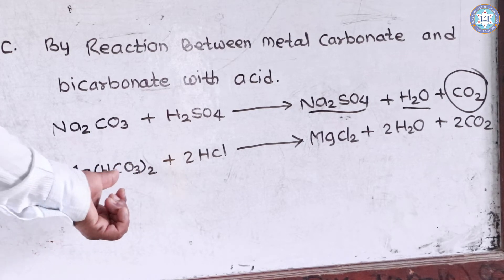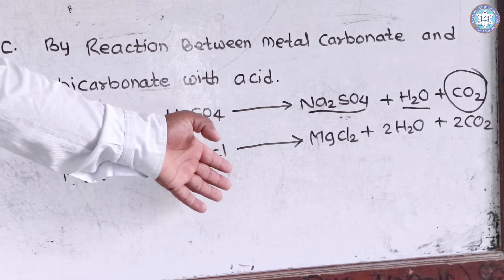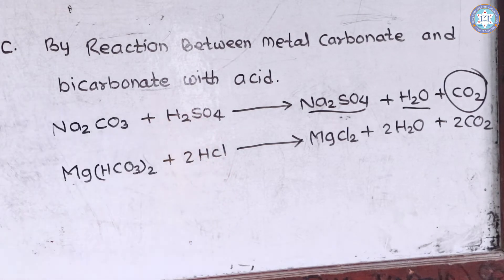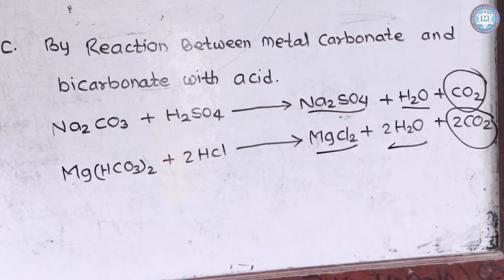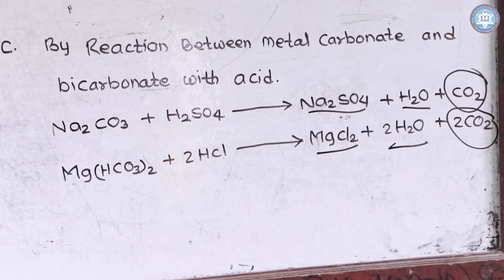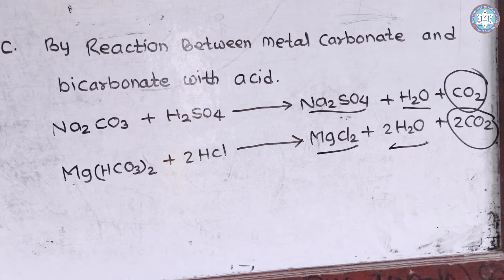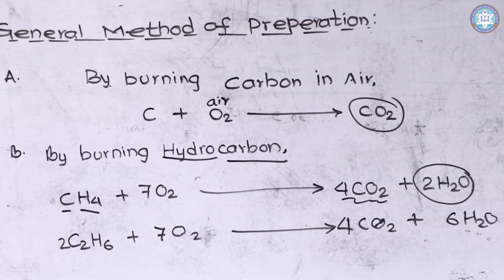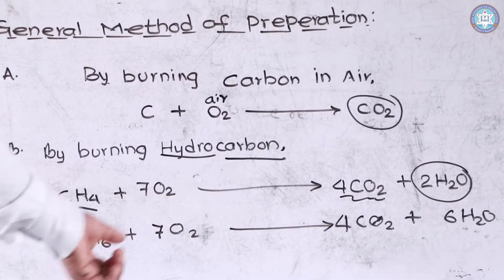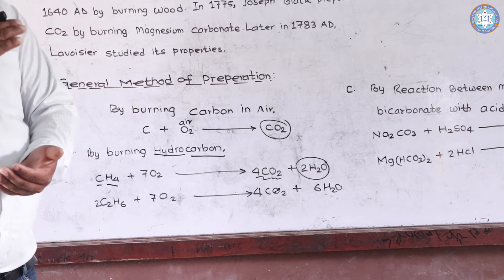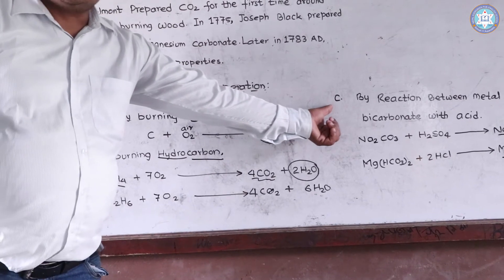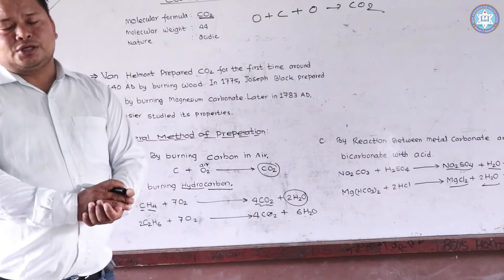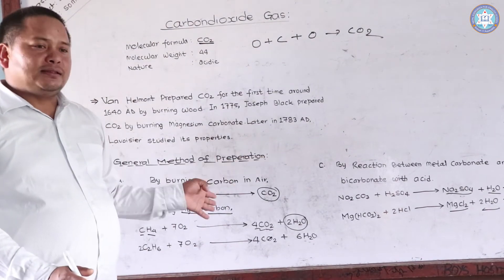In the bicarbonate form — for example, magnesium bicarbonate reacted with hydrochloric acid — the products are a salt, water, and carbon dioxide gas. In this way, we can get carbon dioxide gas by: (A) burning carbon directly in air, (B) burning hydrocarbons, and (C) reacting metal carbonate and bicarbonate with acid. These are the three general methods to produce carbon dioxide gas.